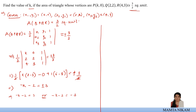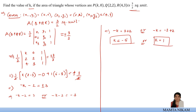Solving both cases: From −k − 2 = 3, we get −k = 5, so k = −5. From −k − 2 = −3, we get −k = −1, so k = 1. Therefore, k = 1 or k = −5. Both values, when substituted, will give the area of the triangle as 3/2 square units.